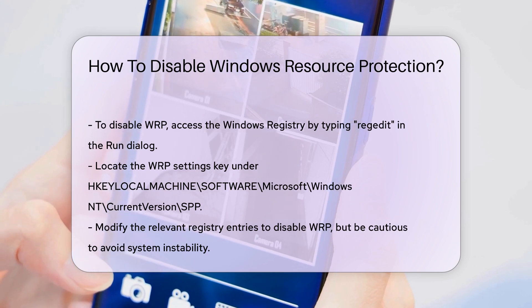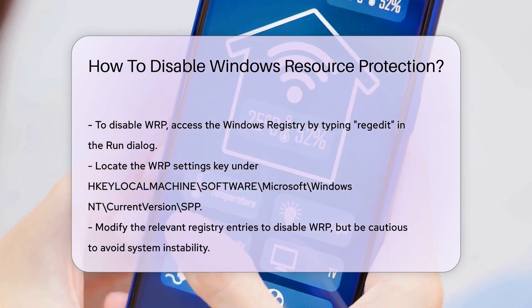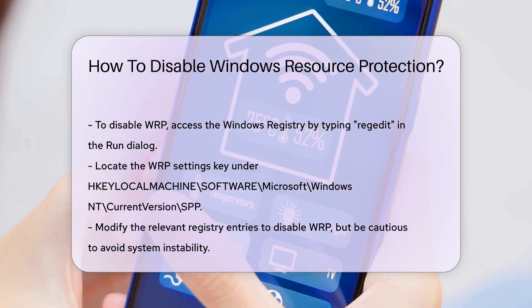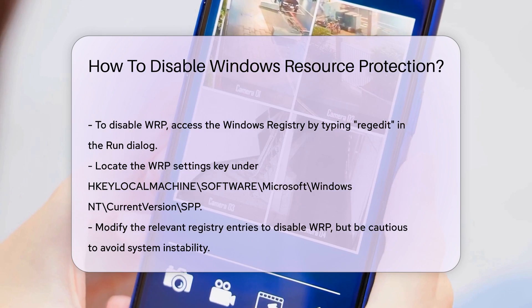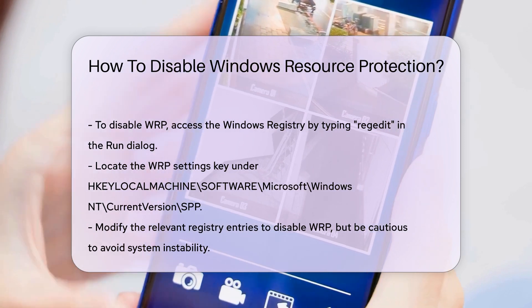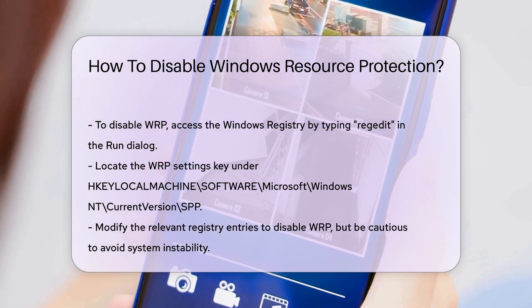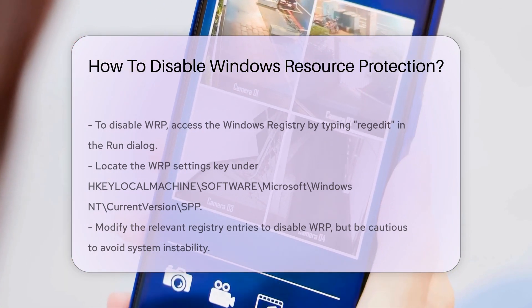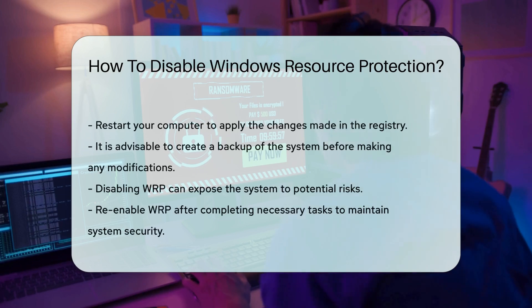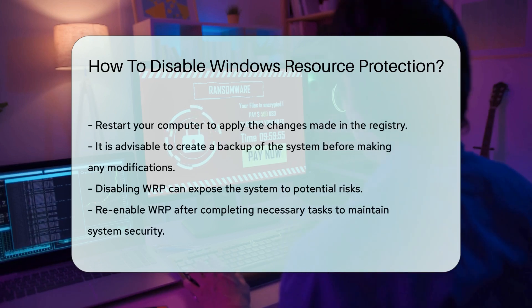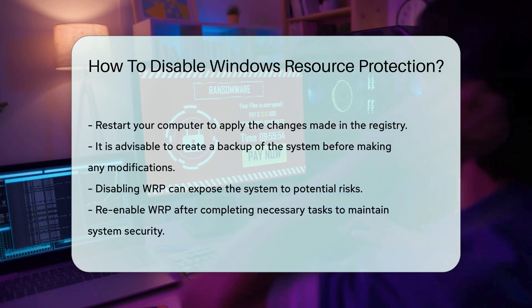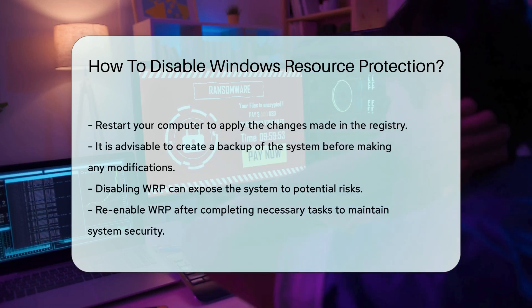Modify the relevant entries to disable WRP. However, be cautious when editing the registry, as incorrect changes can lead to system instability. After making changes, restart your computer to apply the modifications.